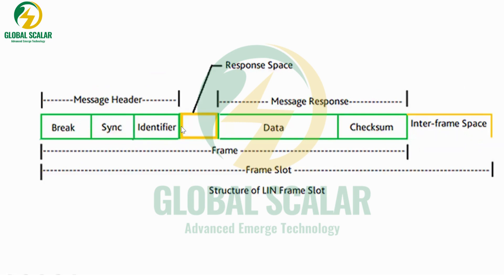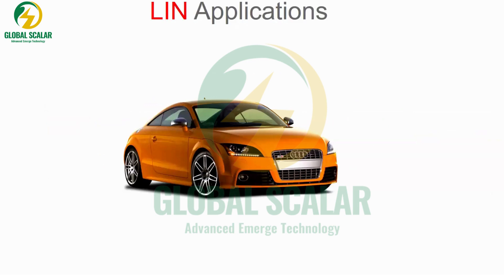Between the message header and message response there is a response space. Together, these are called a frame. Between two messages there is an interframe space. The interframe space, message header, response space, and message response are all together called a frame slot — this is the complete structure of how data is transferred from master to slave.